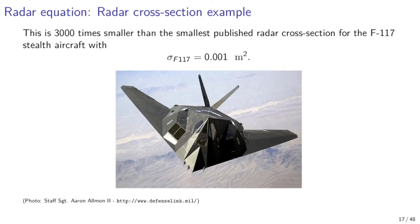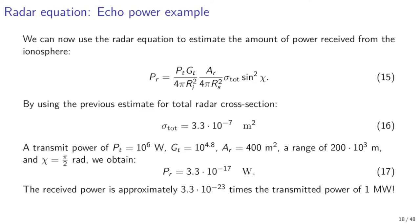We can compare this to a radar target considered nearly invisible by radar: the F-117 stealth fighter. The smallest reported radar cross-section for the F-117 that I found was 0.001 m² — a cross-section 3,000 times larger than the huge volume of ionospheric plasma considered earlier. An incoherent scatter radar capable of detecting ionospheric plasma would have no problem observing a stealth fighter. Using the radar equation with 1 MW transmit power, antenna gain of 10^4.8, effective aperture of 400 m², and a range of 200 km, we obtain a return power of roughly 10⁻¹⁷ W — about 23 orders of magnitude less than the transmitted power.